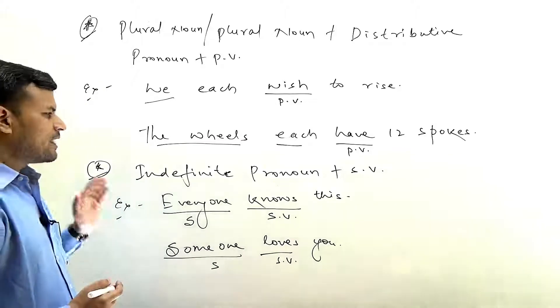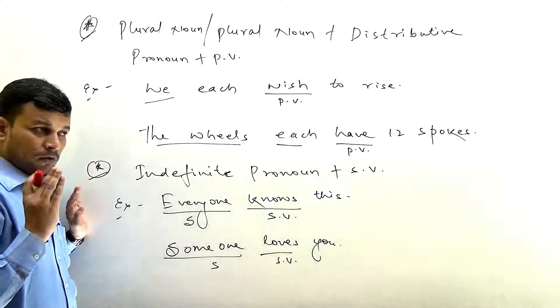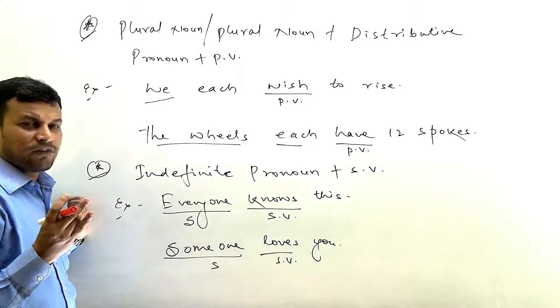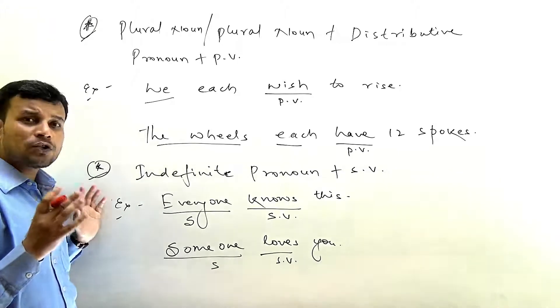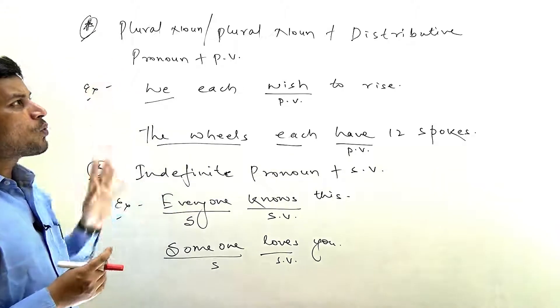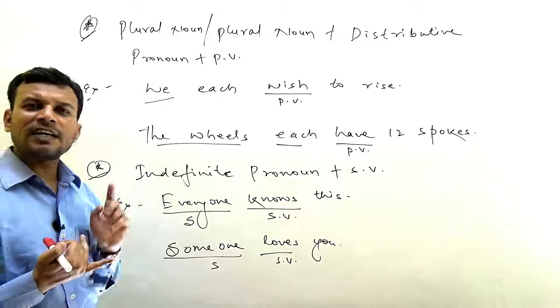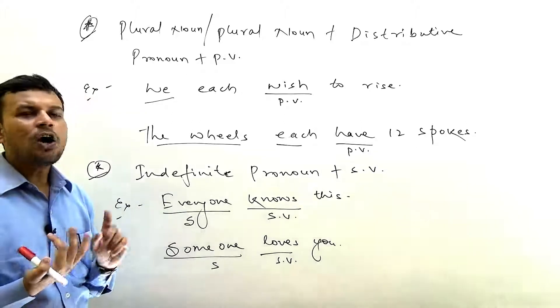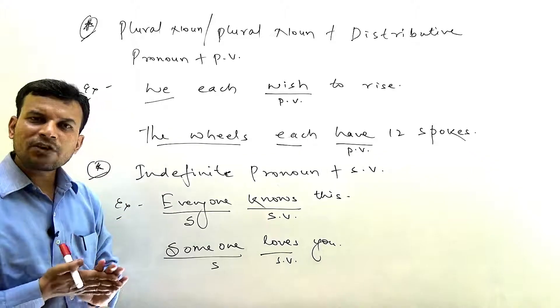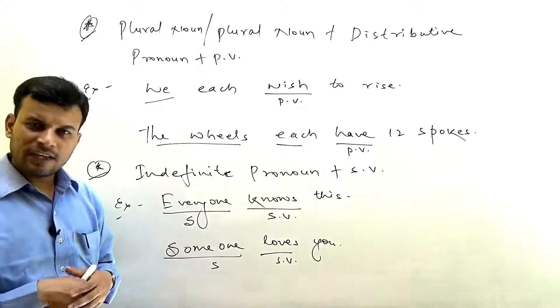So the rule is: indefinite pronouns — everyone, everybody, someone, somebody, no one, nobody, anyone — when they are subjects, the verb is always singular. Combining both rules: each, every, either, neither are singular and take singular verbs; and similarly everyone, someone, no one, nobody, somebody are all singular and take singular verbs.